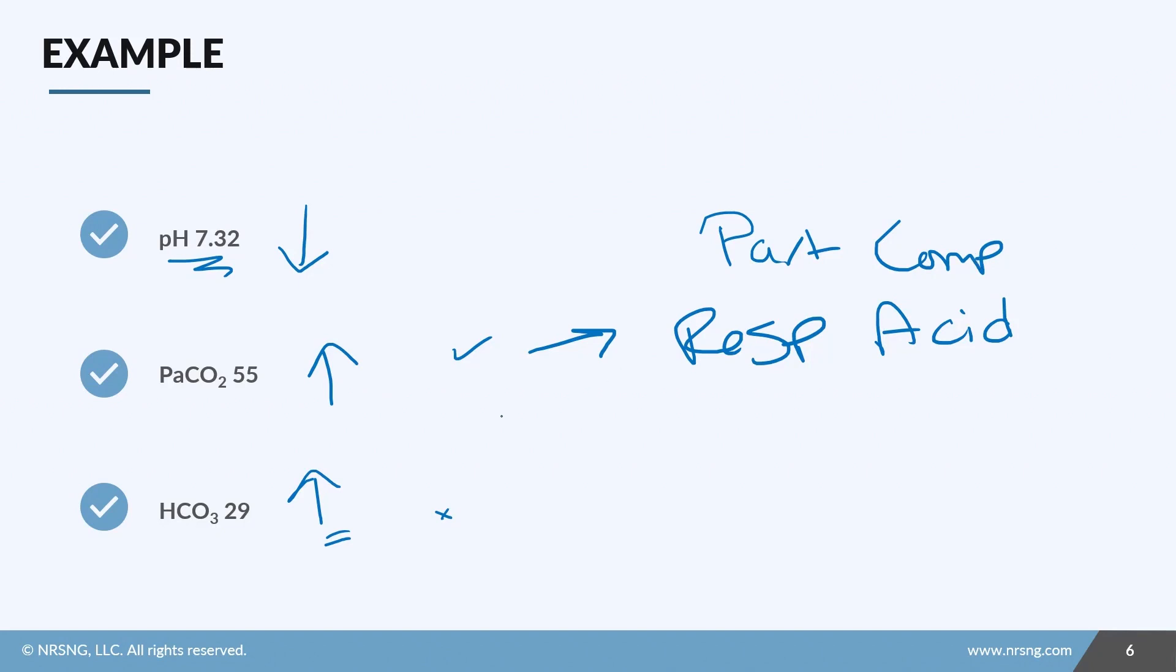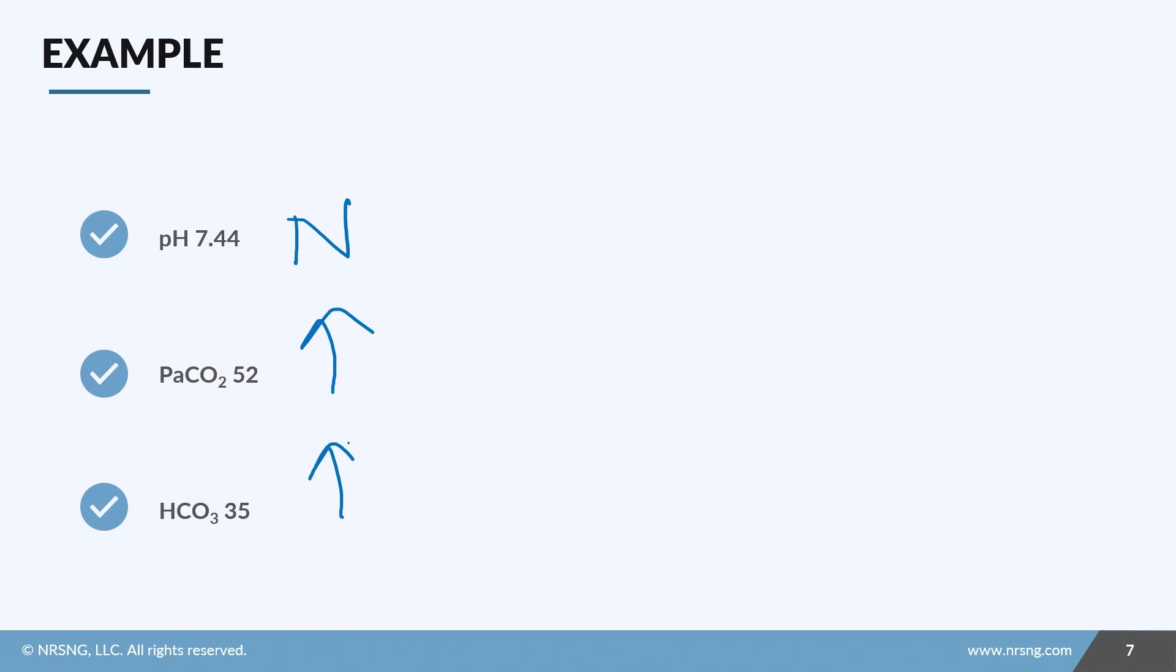Step one: pH of 7.44 is normal. PaCO2 of 52 is high. Bicarb of 35 is high. Okay, don't skip steps here. Step two: what is our source? Well, our pH is normal, but we know there's a problem, right? So is the pH on the high or the low side of normal? Well, if we know pH is 7.35 to 7.45